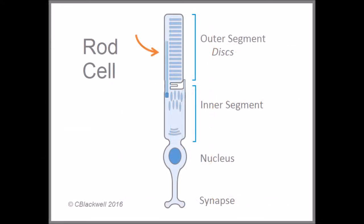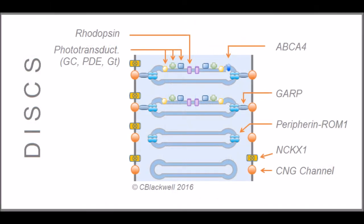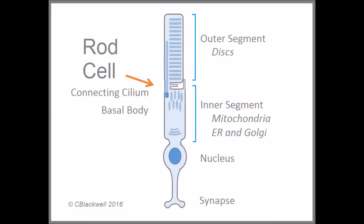The outer segment contains many pancake-like discs, which is where the photosensing rhodopsin and the rest of the phototransduction cascade is located. There are typically a thousand discs in each rod outer segment. The outer segment is connected to the inner segment by the connecting cilium, an important gateway between the two.